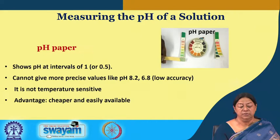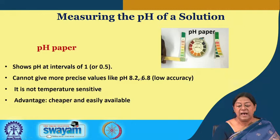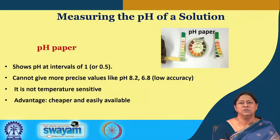A crude way to measure pH is the use of pH paper, which can show pH at intervals of 1 or 0.5. However, it does not give the precise values required for biochemical experiments and it is not temperature sensitive. The advantage is that it is cheaper, easily available, and gives a rough estimate of the pH of the solution.